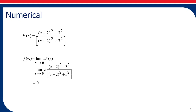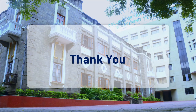Since s is multiplying the numerator, we take the highest degree term common. s³ will be the common term from the numerator and s² from the denominator. After cancellation, s remains as a multiplier in the numerator, and the other terms become (1 + 2/s)² - (3/s)² in numerator and (1 + 2/s)² + (3/s)² in denominator. As s tends to infinity, the value tends to infinity — so the initial value will be infinity and the final value is 0. Thank you.